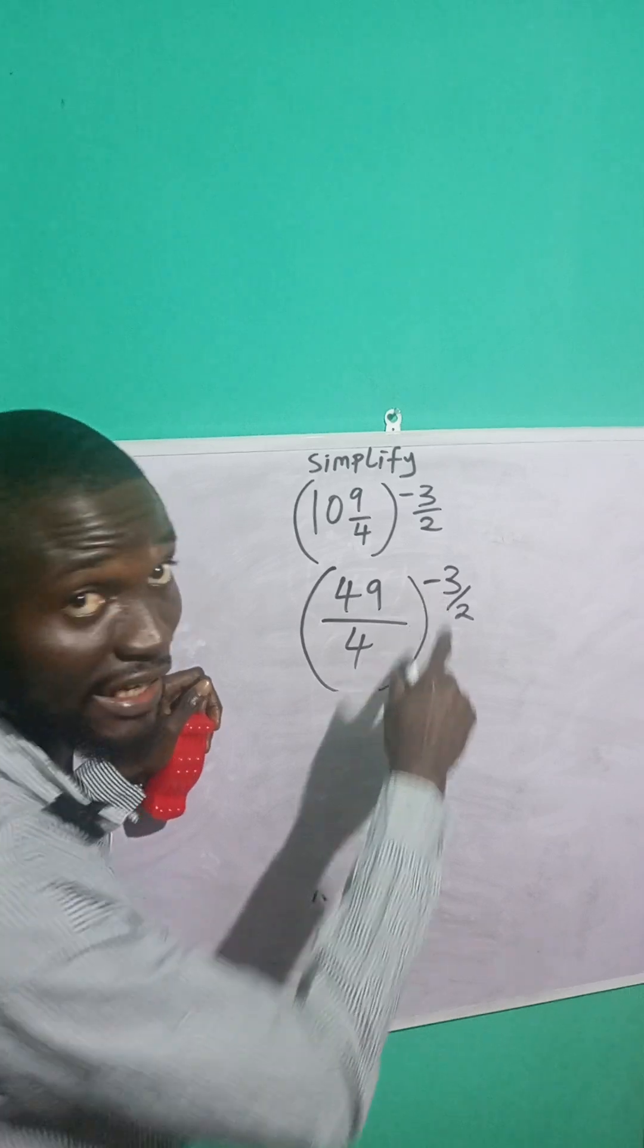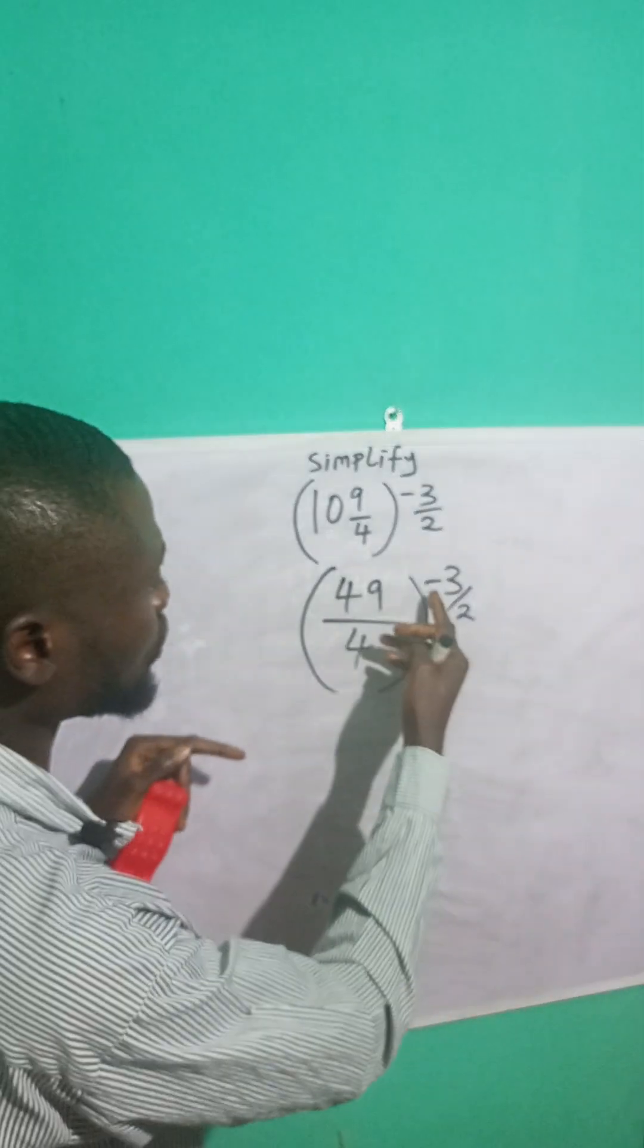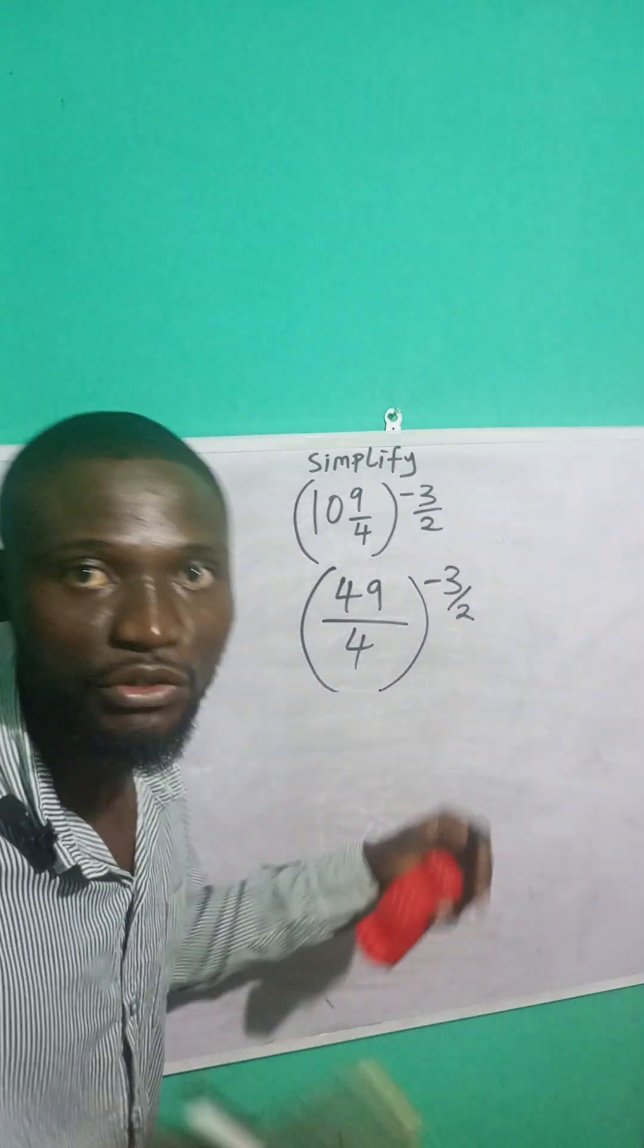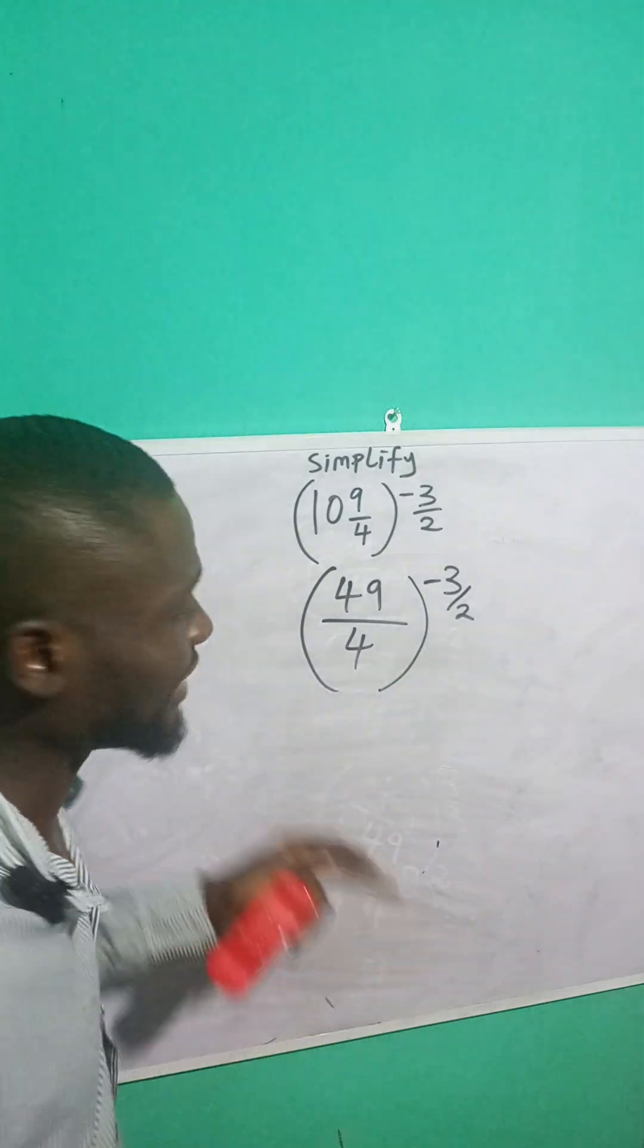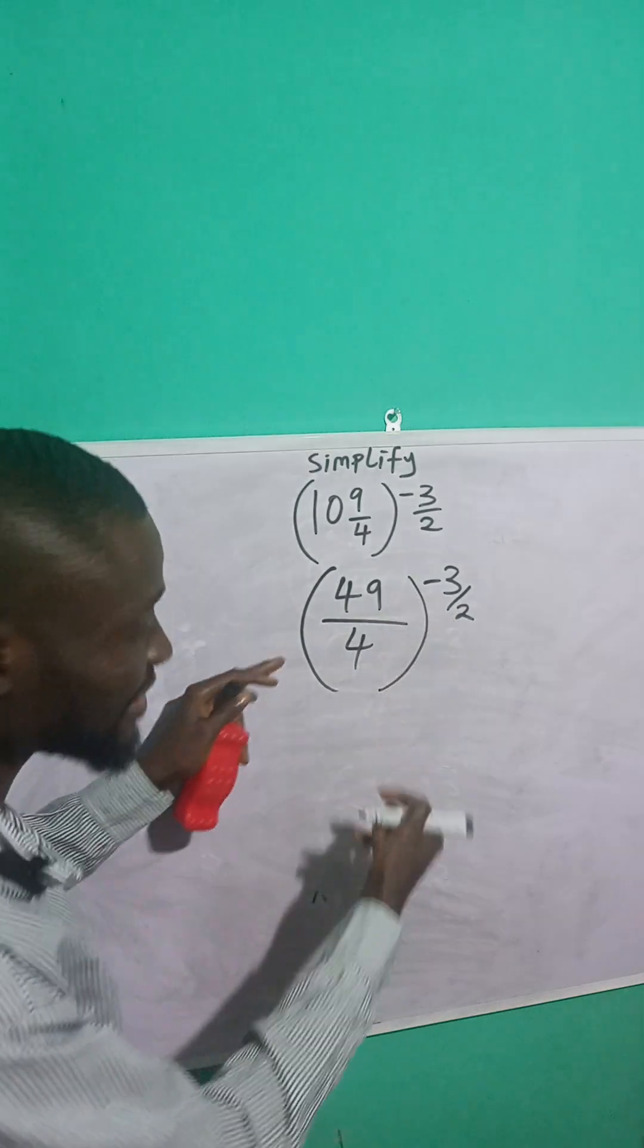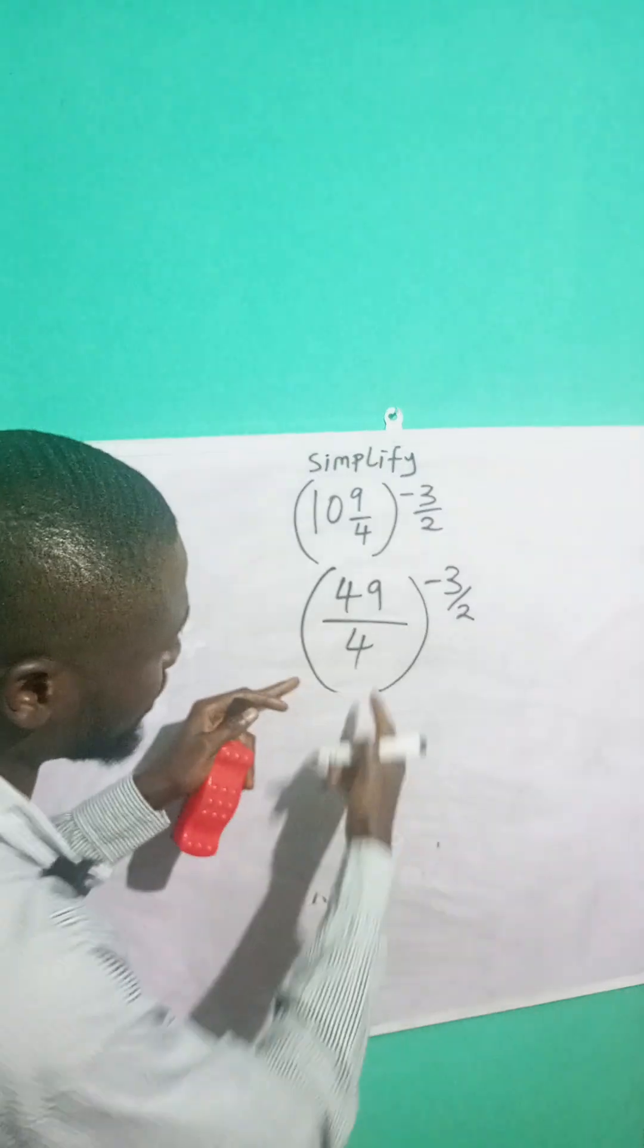Now, remember that whenever you have the negative sign as your power, what you're going to do is apply the negative sign into the fraction. When you do that, you take the reciprocal. You take the inverse by turning the fraction upside down. If you apply this negative sign here,